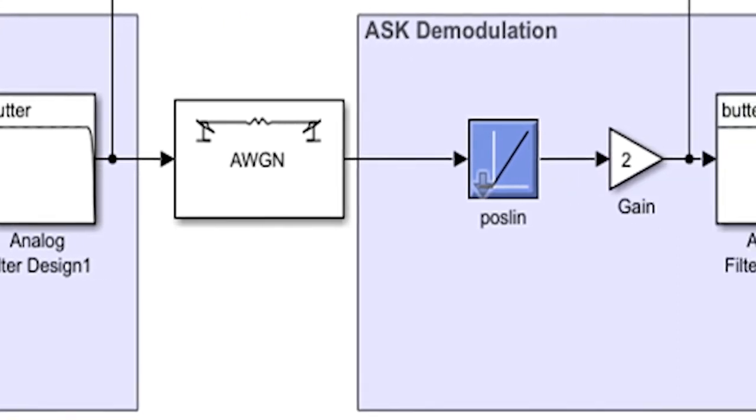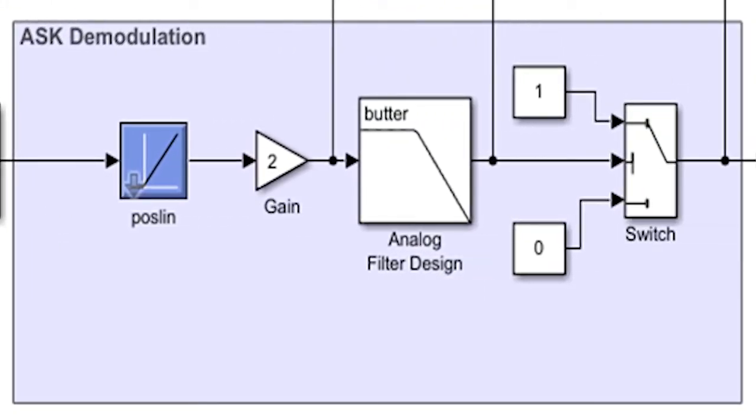And here we come to the demodulation, the receiver circuit. Pos Link stands for positive linear transfer function. Only outputs positive signal after going through gain by a factor of 2.